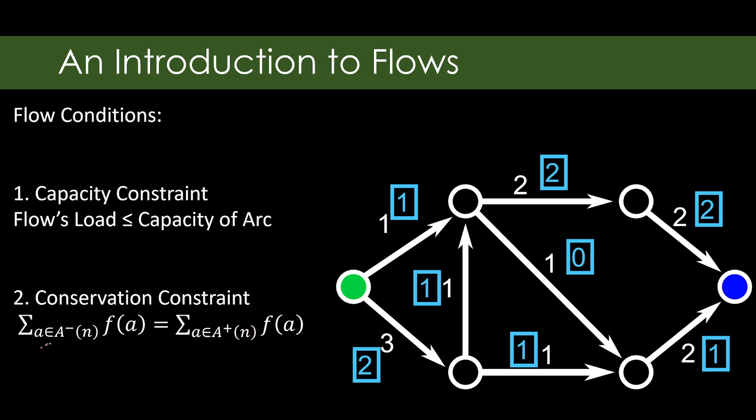Now, what about these? Well, A minus of N is all the arcs that go into it. So if I say this is my node, this is N, then these ones are in A minus. And then these ones are in the A plus. So what it's saying is look at all of the arcs in A minus of this node and all of the arcs in A plus of this node. And make sure they're the same.